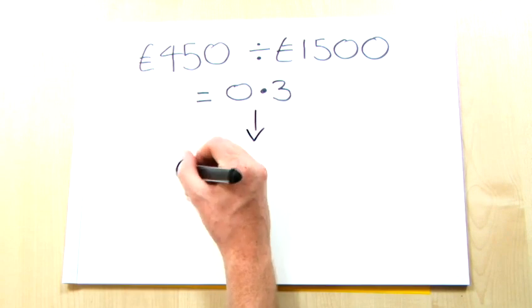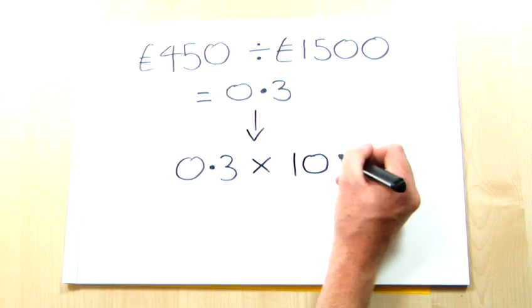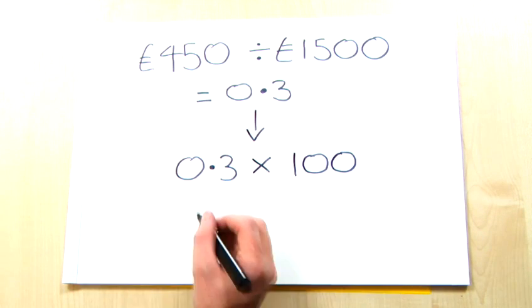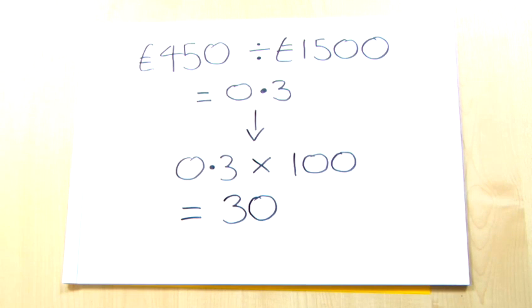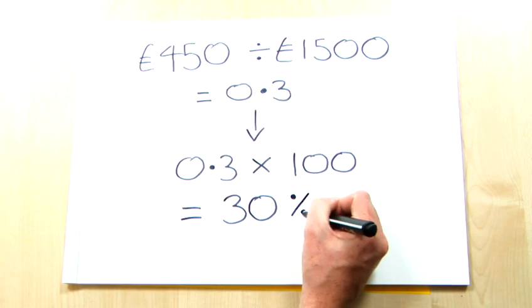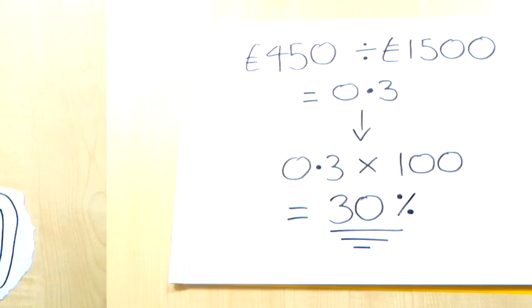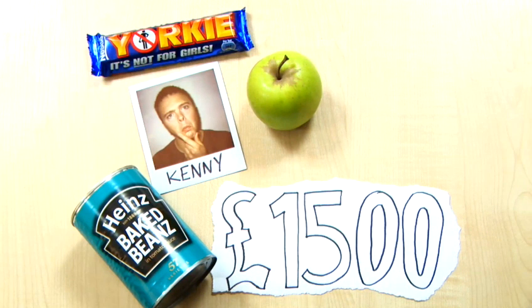Now a percentage is simply a way of expressing a number as a fraction of 100. So take the figure of 0.3, multiply by 100, and that should leave you with an answer of 30, showing that Kenny spends 30% of his monthly income on food. At that rate, Kenny may have to apportion some of his budget to a pair of trousers with a larger waistband.